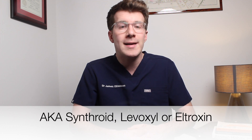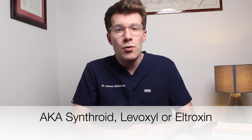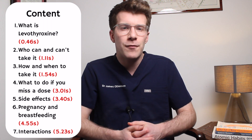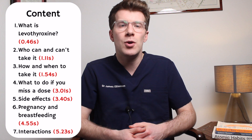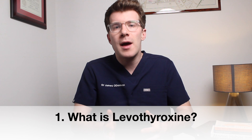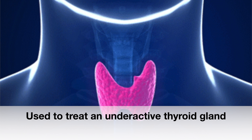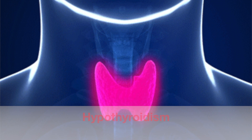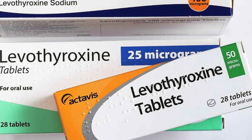Levothyroxine is also known by its brand names Synthroid and Levoxil. Each section is time-stamped so please feel free to skip ahead if there's a particular section you're interested in. Levothyroxine is a medicine used to treat an underactive thyroid gland, known as hypothyroidism. The thyroid gland makes hormones which help the body to control energy levels as well as growth. Levothyroxine is taken to replace the missing thyroid hormone, which is known as thyroxine.